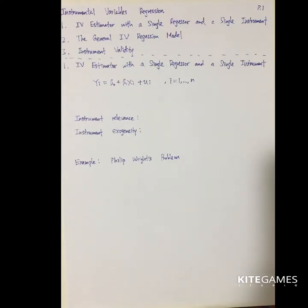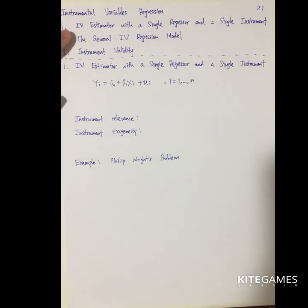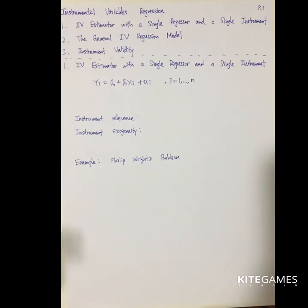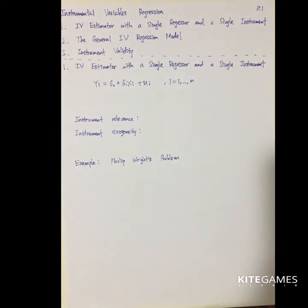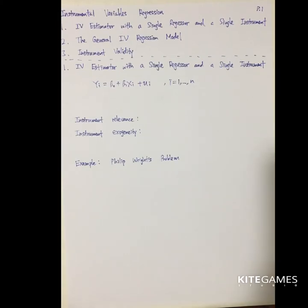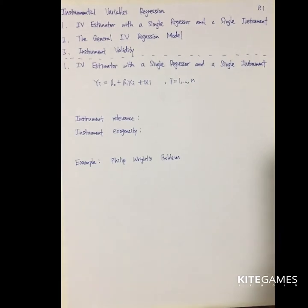This video we will talk about Instrumental Variables Regression. First, we will talk about the IV Estimators — IV stands for Instrumental Variables — specifically the IV Estimator with one regressor and one instrument. Second, we will extend the model into the general model. Finally, we will talk about Instrument Validity to see whether the instruments are good or bad.